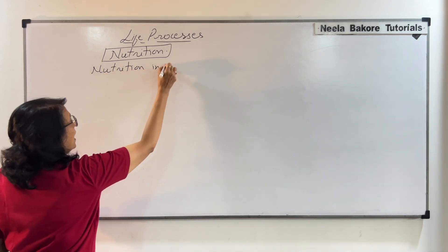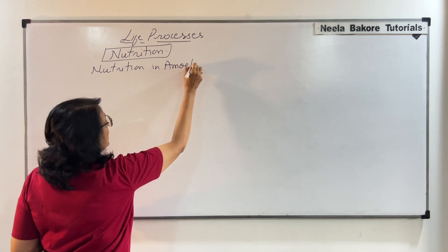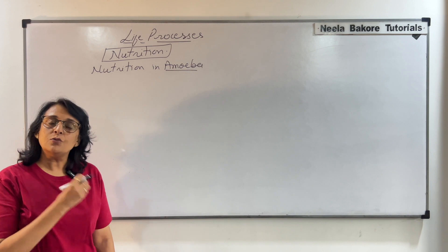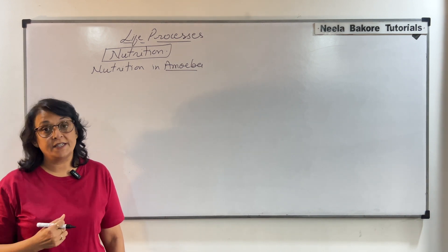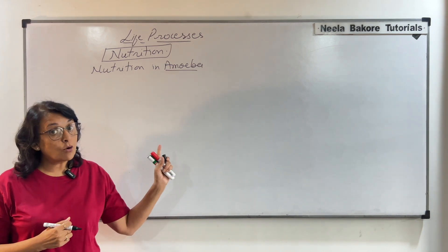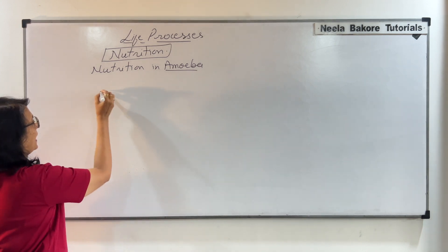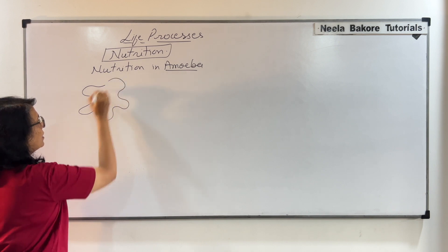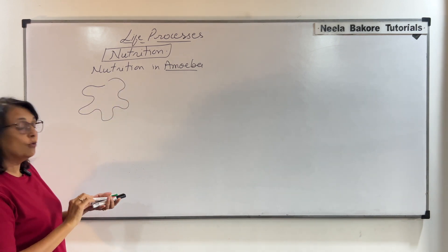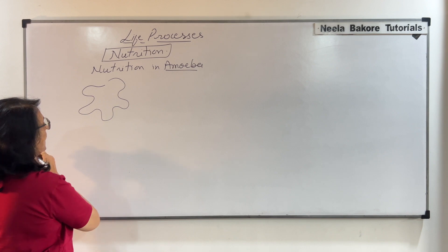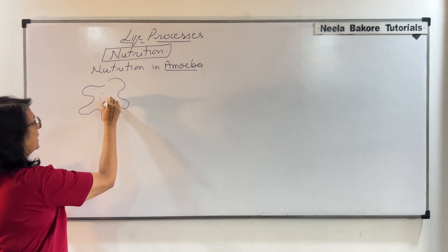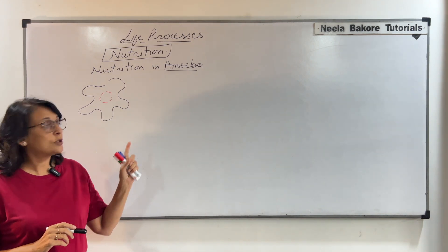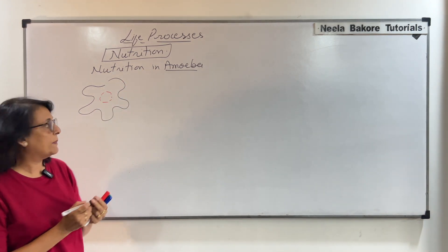Amoeba is a unicellular organism. How is this unicellular organism obtaining its nourishment? It follows a heterotrophic mode of nutrition. Amoeba is an irregular unicellular organism — it has its nucleus and other organelles inside the cell. It moves by pseudopodia.